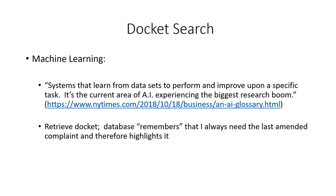The New York Times has this AI glossary — the URL is there in blue if you want to check it out — and they call machine learning systems that learn from data sets to perform and improve upon a specific task. It's the current area of AI experiencing the biggest research boom.